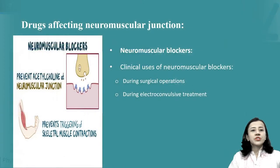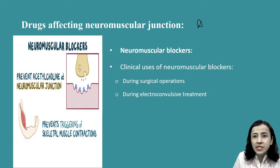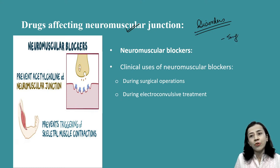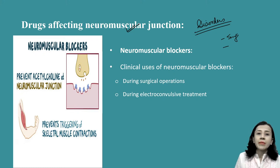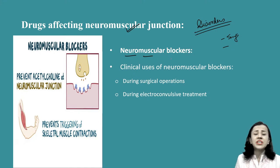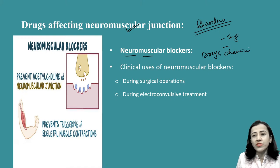Let us come to today's topic — various drugs affecting neuromuscular junctions. Today's topic covers certain disorders plus drugs, whatever things affect your neuromuscular junction. This topic is important if you are interested in surgical branches like orthopedics, where you need to reduce fractures, as well as for physiotherapists who come across many patients in which neuromuscular blockers are required.